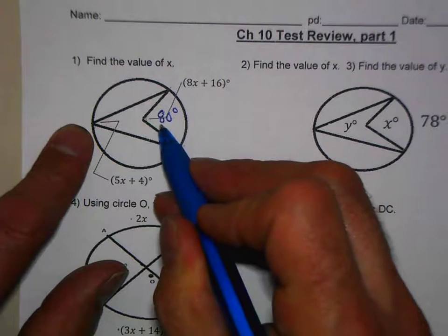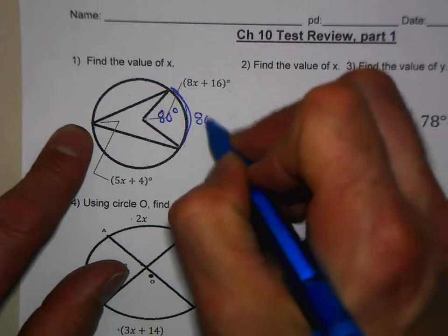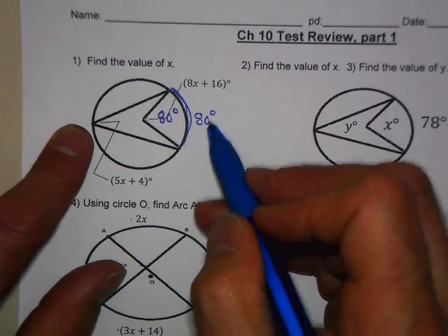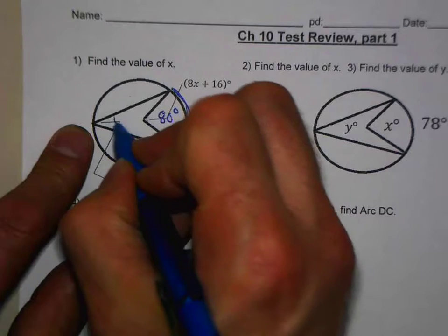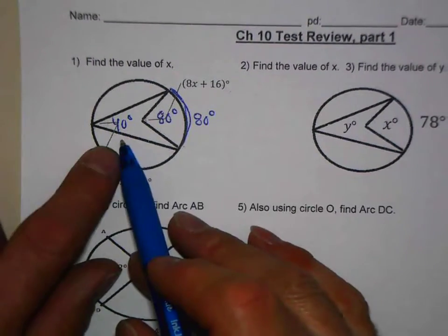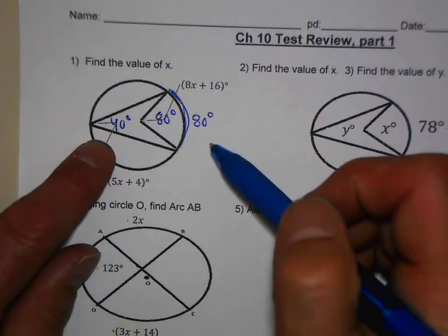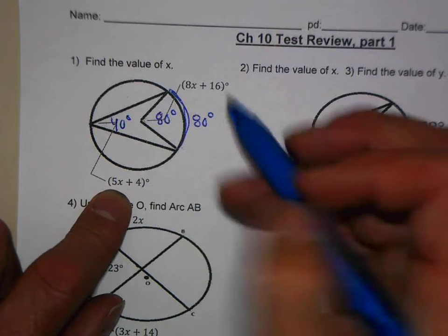...what would be the measure of this intercepted arc? It would also be 80 degrees. And if that intercepted arc was 80 degrees, what would be the measure of this inscribed angle? It would be 40 degrees, half of that. So therefore, we want to take this expression...